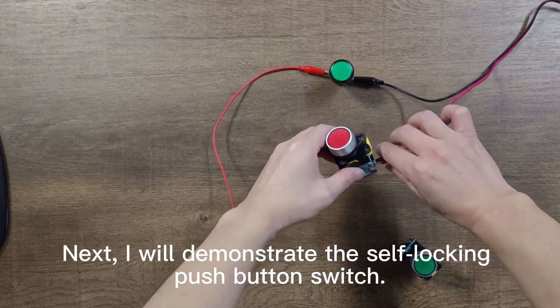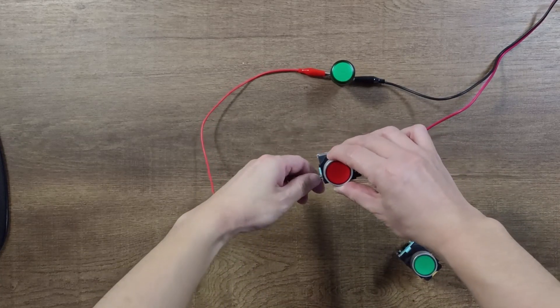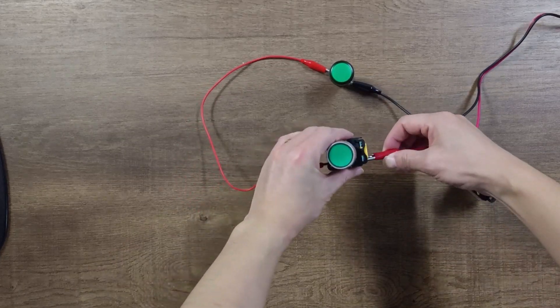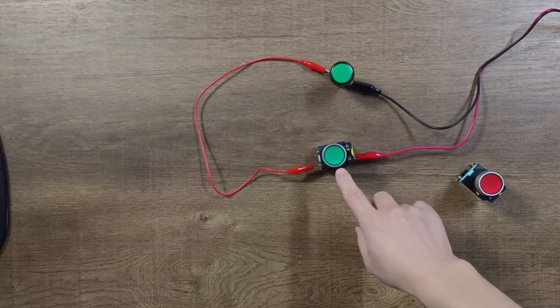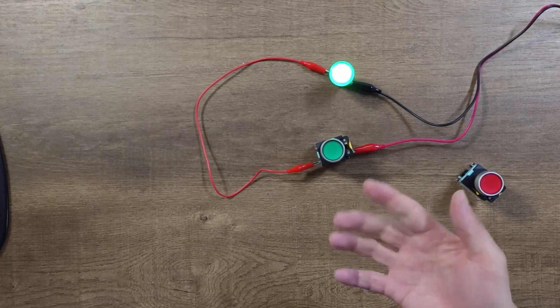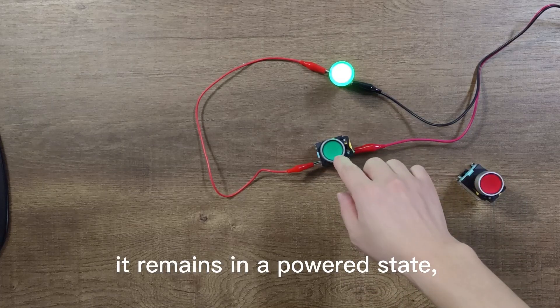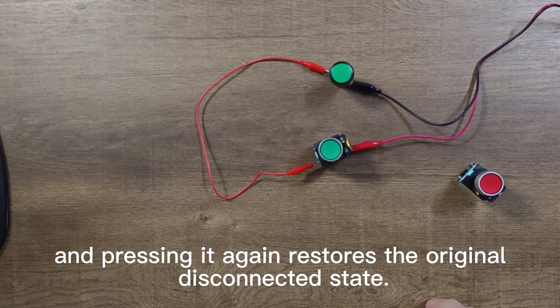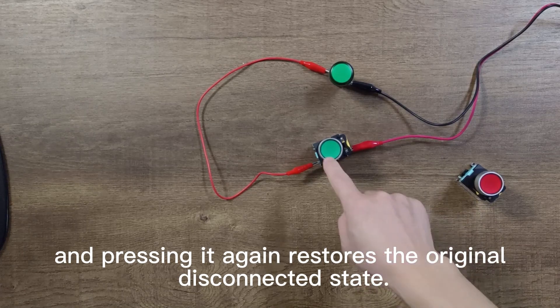Next, I will demonstrate the self-locking push-button switch. Let's press it first and see that when I release it, it remains in a powered state, and pressing it again restores the original disconnected state.